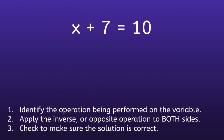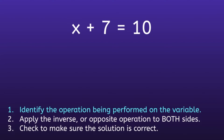Example Number 1: X plus 7 is equal to 10. The first thing we want to recognize is the variable. A variable is a letter used to represent an unknown value, and in this equation the variable is X. Step 1: Identify the operation being performed on the variable. If we look at this equation, we can see that the operation being performed on the variable is plus 7.